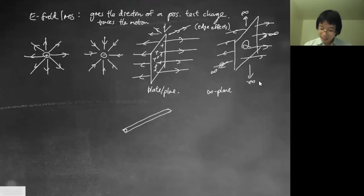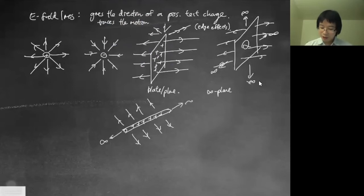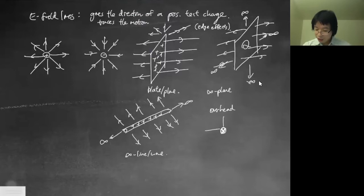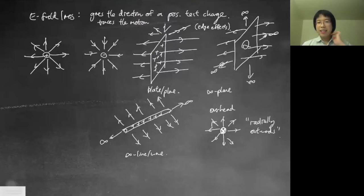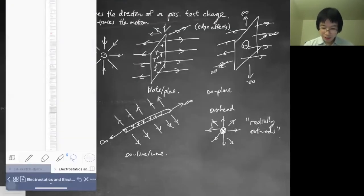For a line of positive charge, the electric field radially goes outward. There are edge effects at the ends, so we sometimes talk about an infinite line or infinite wire. On a cross-section overhead view, the field points radially outward. Instead of me drawing everything, let me show you a few pictures to get the idea.